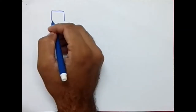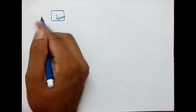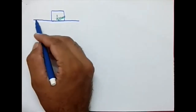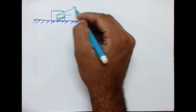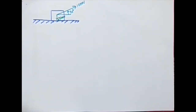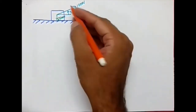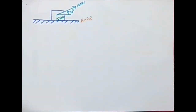Let's solve this problem. A block weighing 2500 Newton is resting on a perfectly horizontal surface. There is an applied force of 1000 Newton at an angle of 30 degrees with the horizontal. The coefficient of friction (mu) between the block and the surface is 0.2.